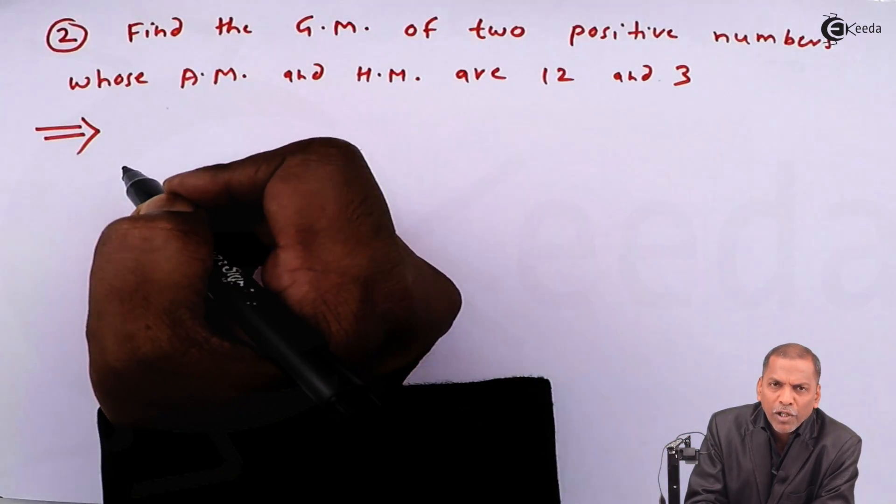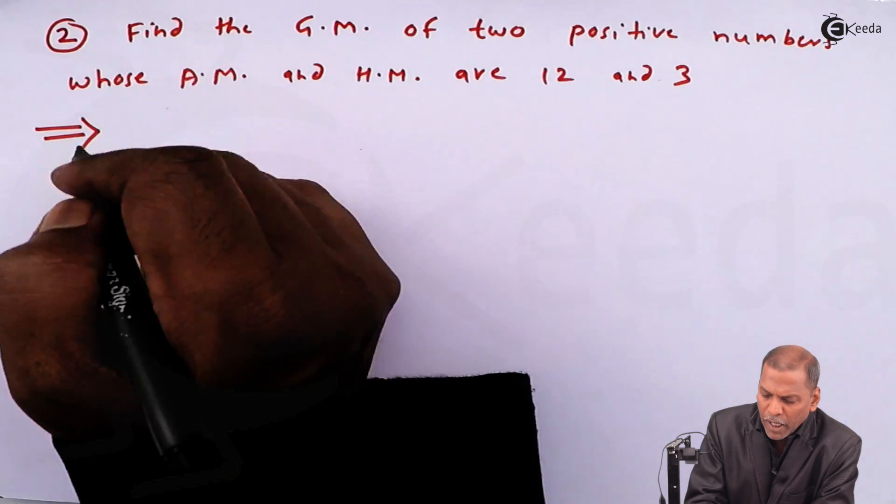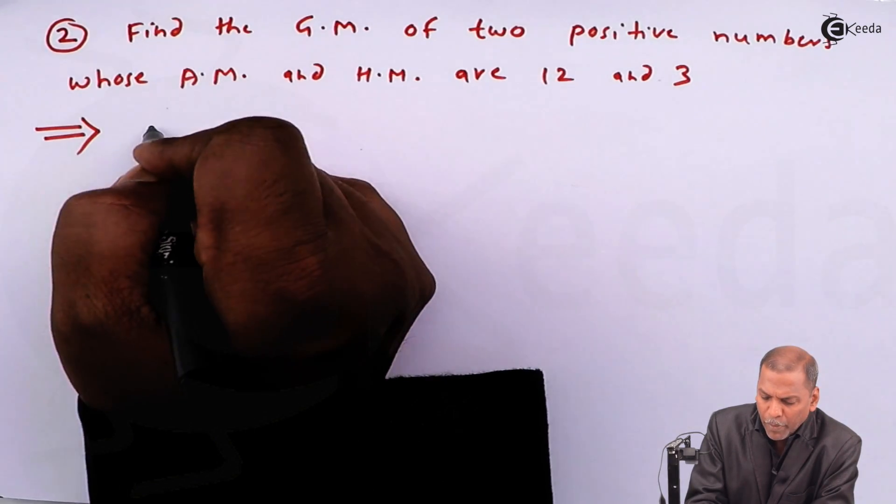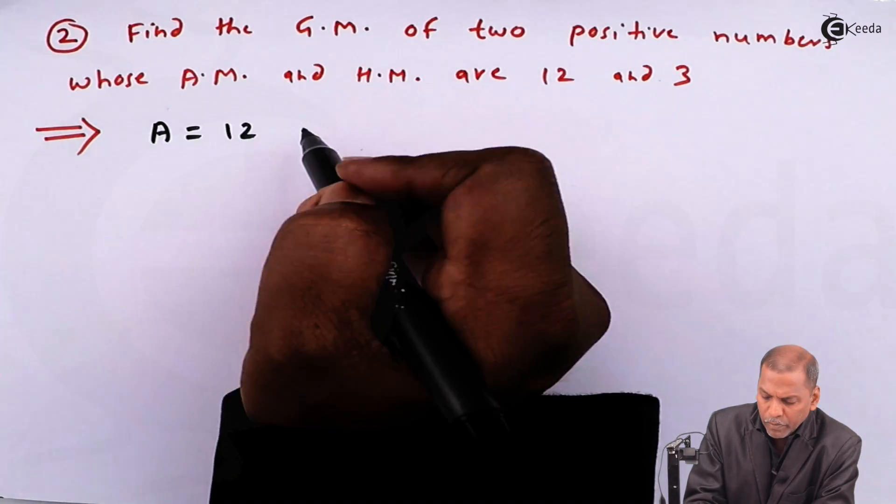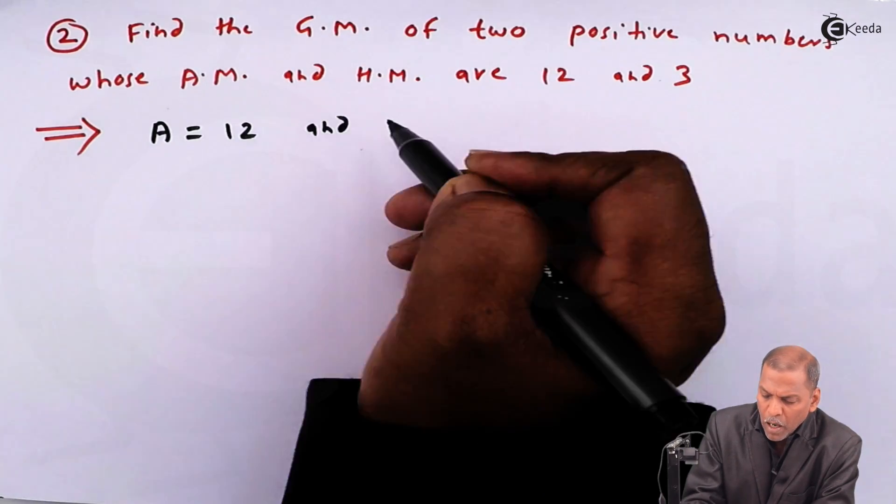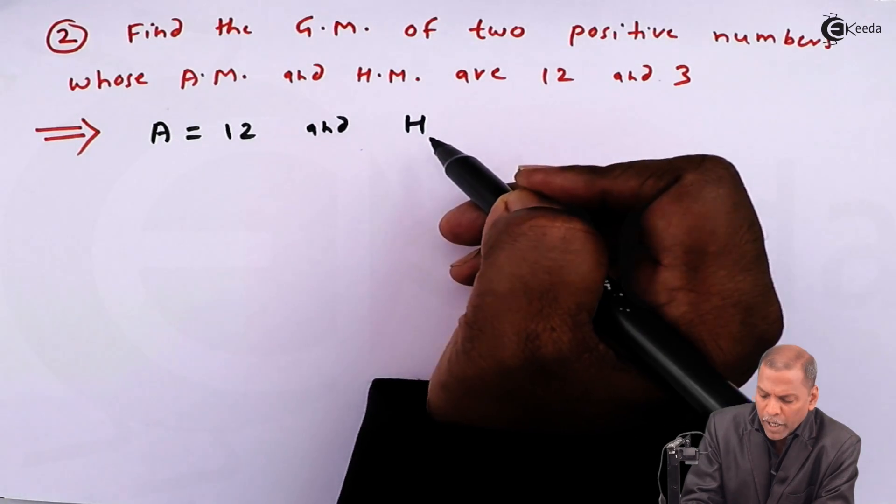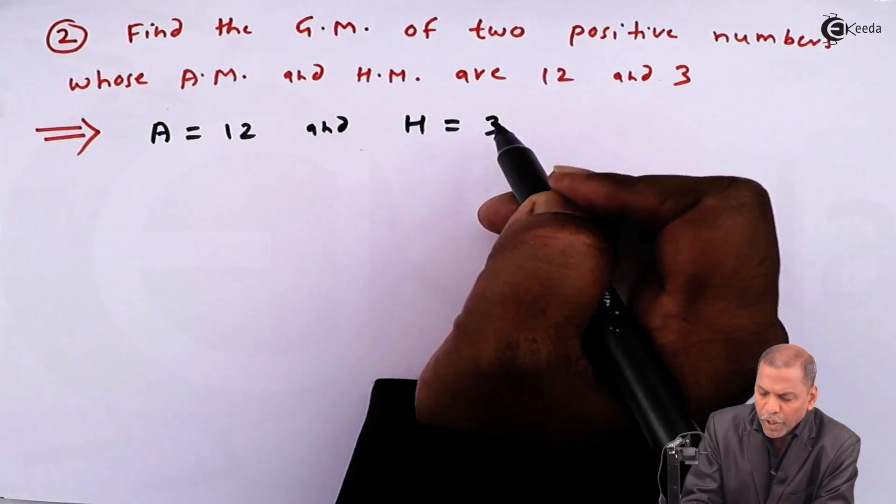So in the question we have given that arithmetic mean capital A is equal to 12, and harmonic mean capital H is equal to 3.